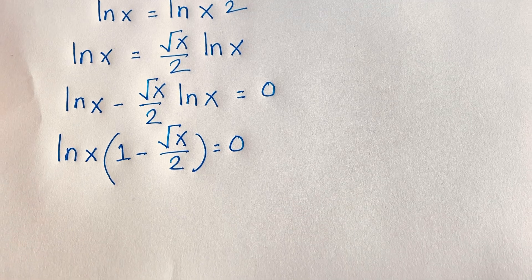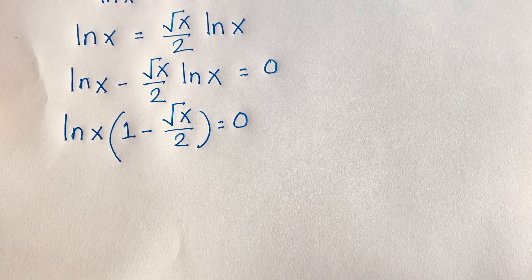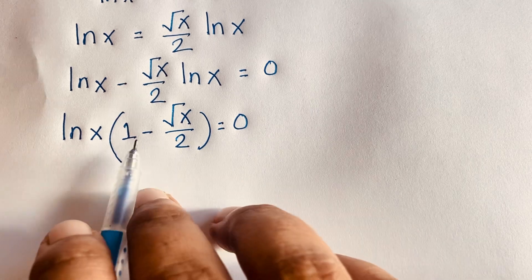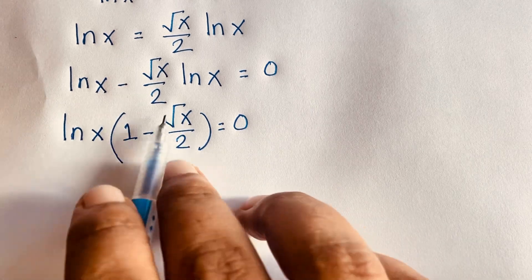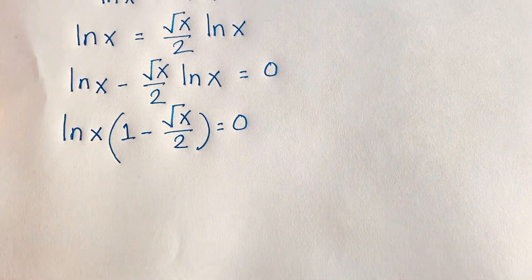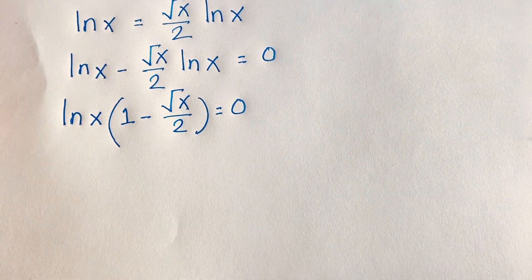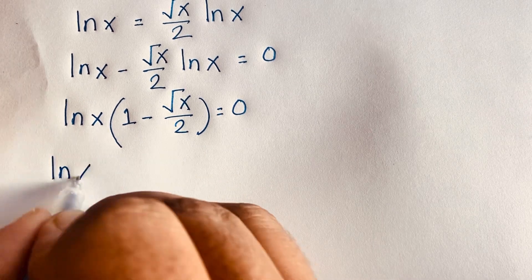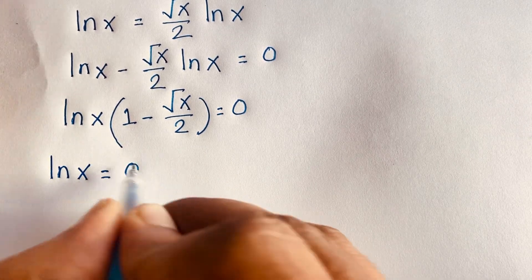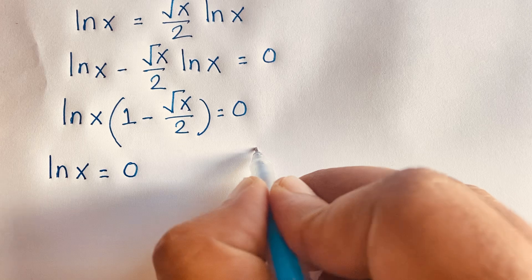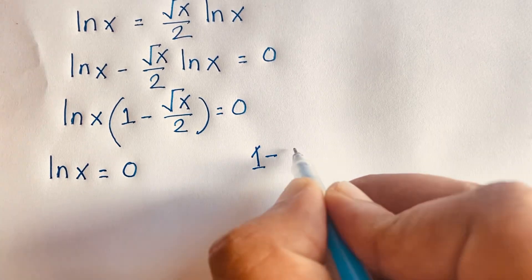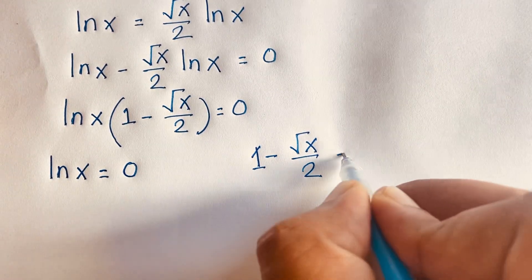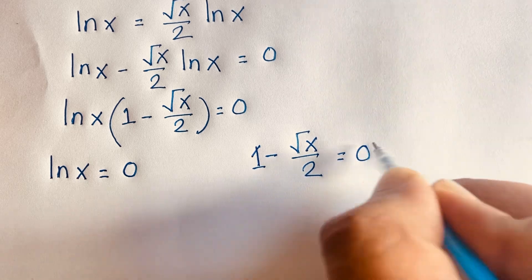This gives us two cases. Our first case is ln x equals zero. The other case is one minus square root x over two equals zero.